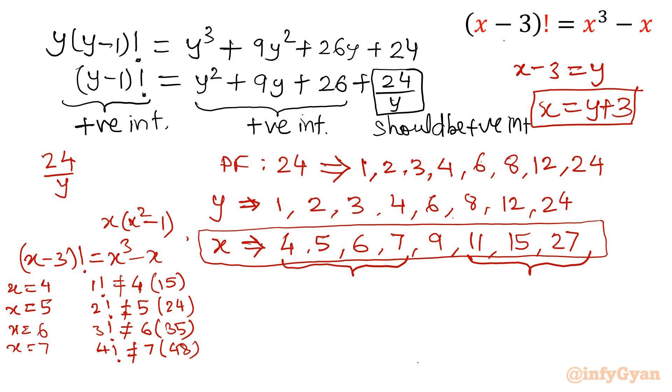Once you put x = 9, then the left hand side becomes (9 - 3)! = 6!. The right side is 9(9² - 1) = 9(80) = 720. And 6! is also 720. This is our solution. So x equals 9 is our solution.